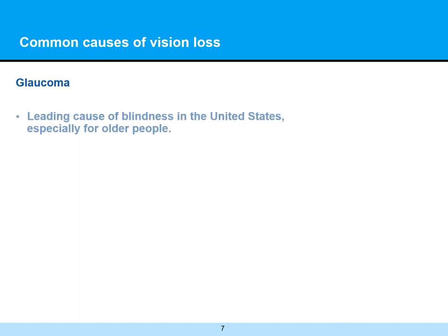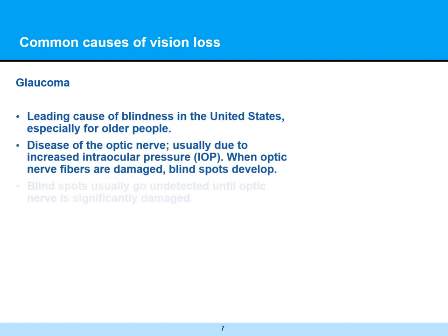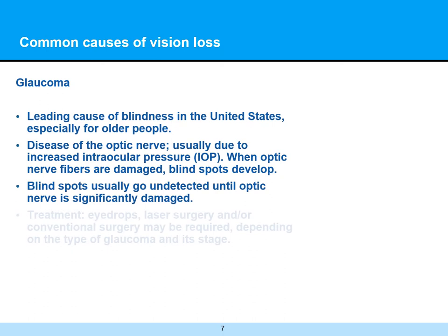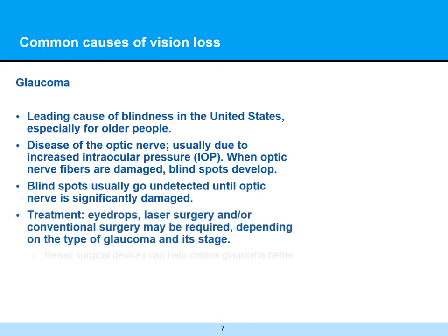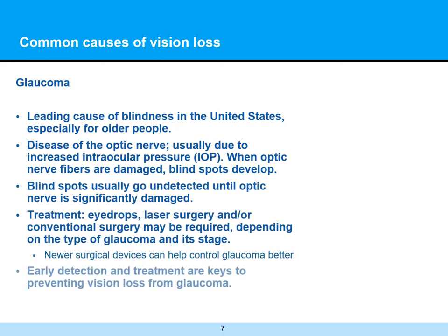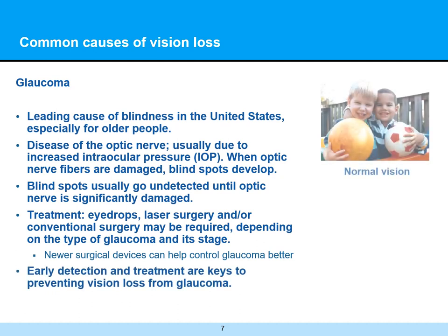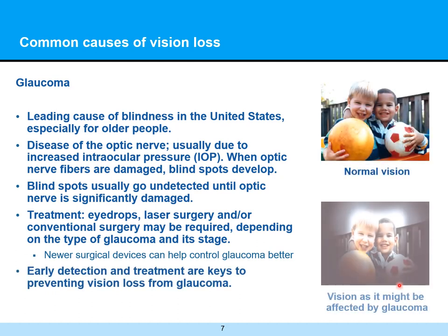Glaucoma is another leading cause of blindness in the United States, especially for older people. It's a disease of the optic nerve, usually associated with increased intraocular pressure. When that occurs, it can create blind spots in the vision. When the optic nerve fibers are damaged, blind spots develop — and unfortunately, these blind spots can go undetected until the optic nerve is significantly damaged.